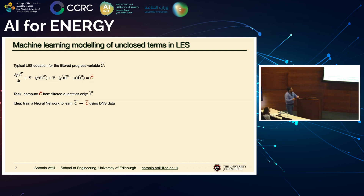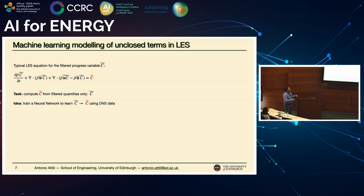To set up the scene: when you do an LES, you have an equation for whatever variable. Let's focus on the progress variable C, which describes combustion — you can think of it as temperature going from minimum to maximum through the flame. When you solve this in LES, you filter the equation because the grid is too coarse to resolve it completely. You end up with unknown terms — since they are nonlinear, the reaction rate C-dot becomes unknown as a function of the filtered C-tilde. We need a model to close this. The idea: replace the relation between this input and this output with a neural network trained on DNS data.